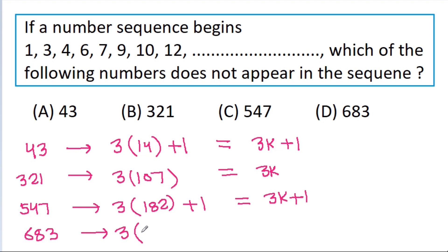3 times 227 plus 2, so it is 3k plus 2. And 3k plus 1 and 3k will lie in this sequence, so the correct option is option D.